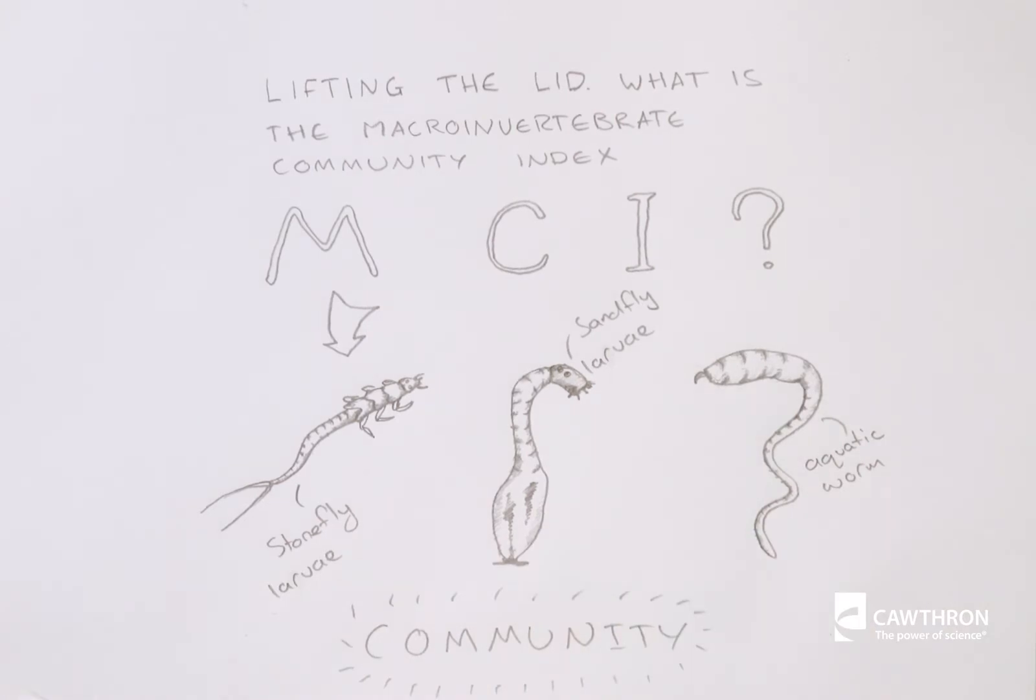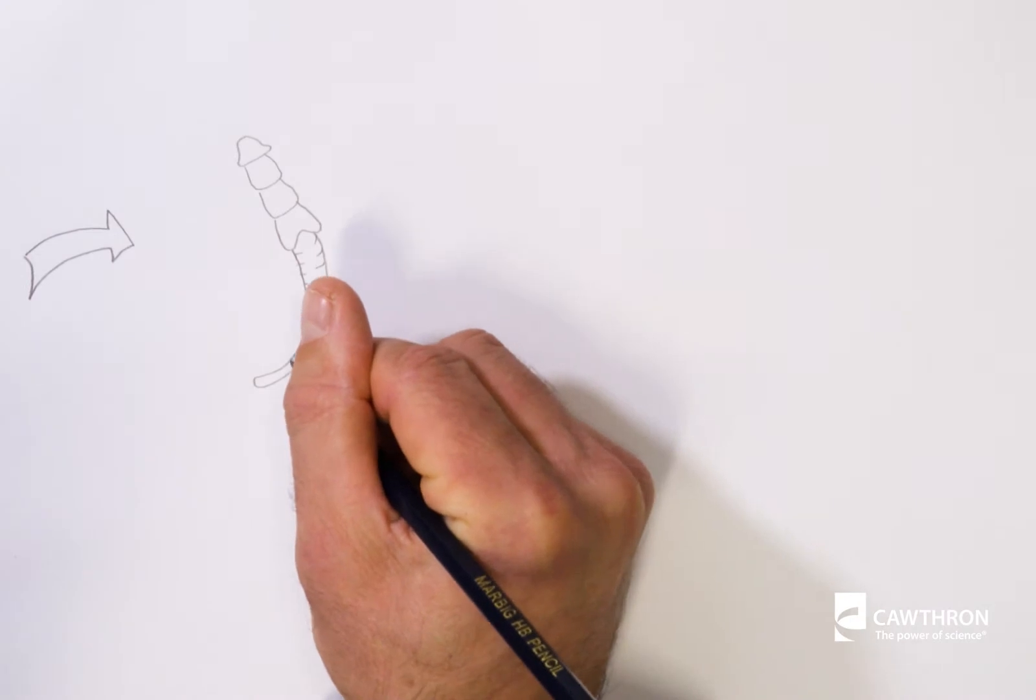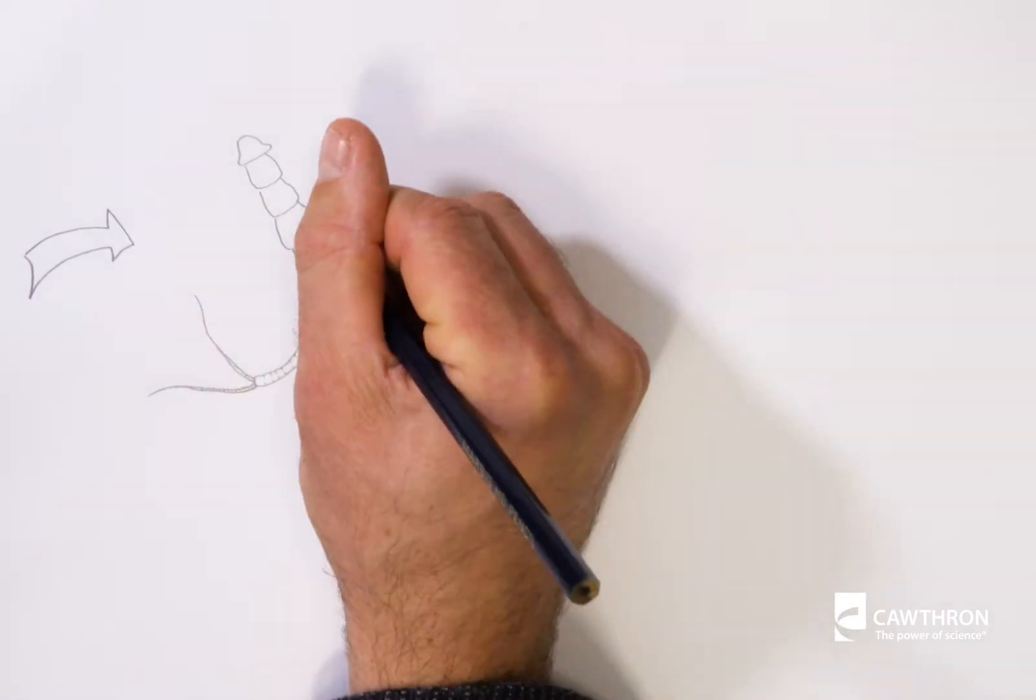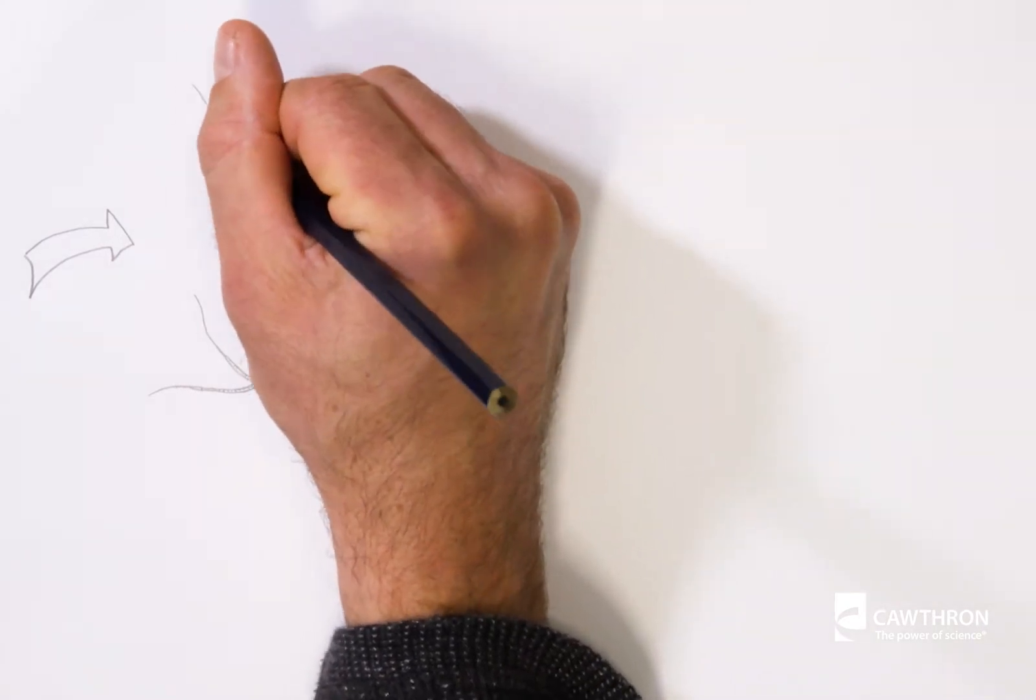Put together all the invertebrates that live in a stream or river, and you have a macroinvertebrate community. So what about the index part of the MCI? Well, different stream bugs have an amazing array of life histories, strategies and tactics. Think all the drama of David Attenborough on the African savannah played out in a minute underwater world.